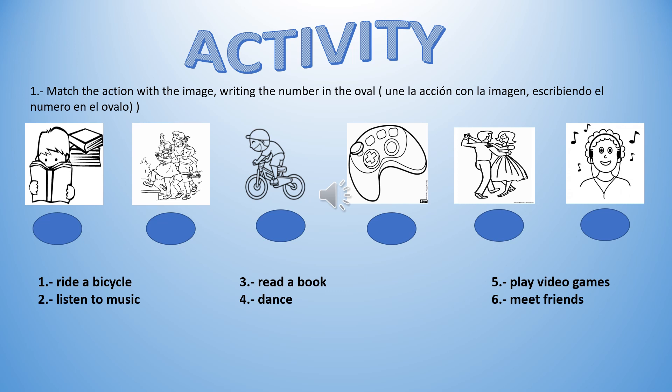Tengo que mirar bien las imágenes, leer las acciones, y en el óvalo que está bajo cada una de las figuras, poner el número donde está escrita la acción que se está realizando. Number one: Ride a bicycle. Two: Listen to music. Three: Read a book. Four: Dance. Five: Play video games. Six: Meet friends. Ahora les toca a ustedes trabajar.